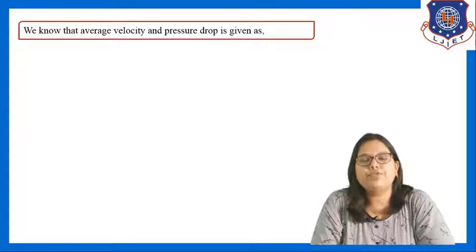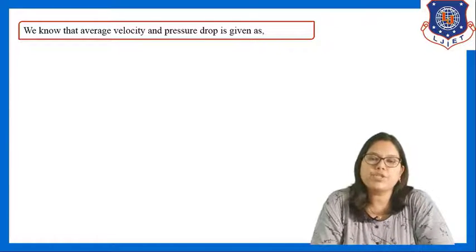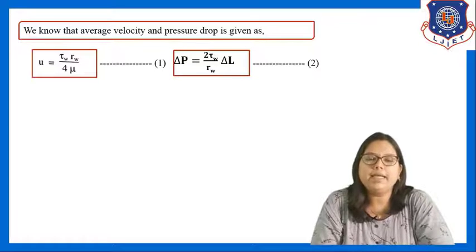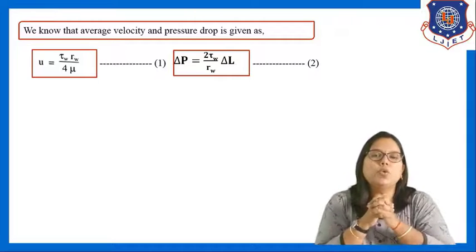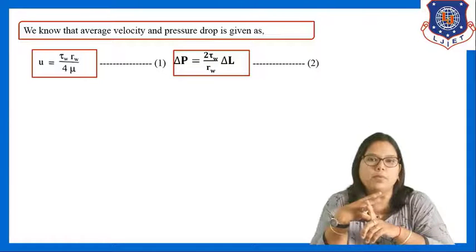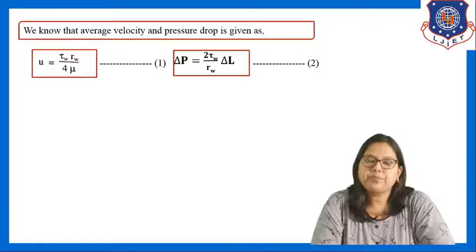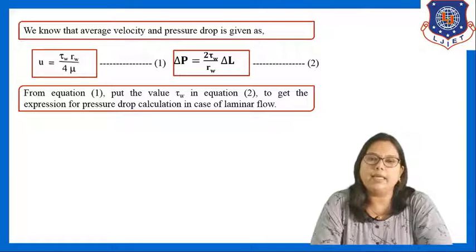We have equations for average velocity and pressure drop from our previous lectures. The equation for average velocity is: ū = τ_w · r_w / (4μ). The equation for pressure drop is: ΔP = 2τ_w · r_w · ΔL / (r_w). These are the two equations from which we derive the Hagen-Poiseuille equation. From equation 1, we can write an expression for τ_w, which we then substitute into equation 2 to get an equation for ΔP.